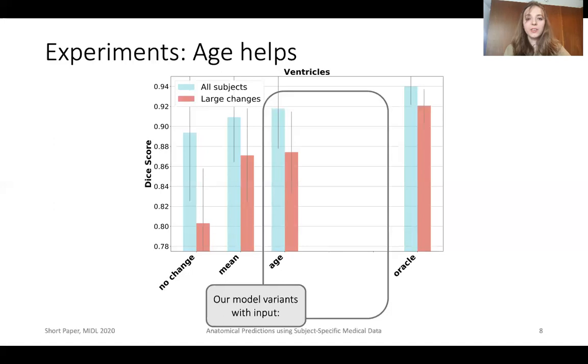We consider different variants of our model. They simply differ by what information they are given as input. First, we look at the model that predicts the deformation field when only given the age of the subject. We can already see that it improves upon the two other solutions that we propose for ventricles.